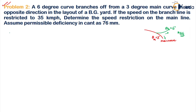It says if the speed of the branch line is restricted to 35 km/h. So the speed of the branch line is given to us as 35 km/h. Because it is given in km per hour, we have taken it as capital V. What we have to do is determine the speed restriction on the main line.